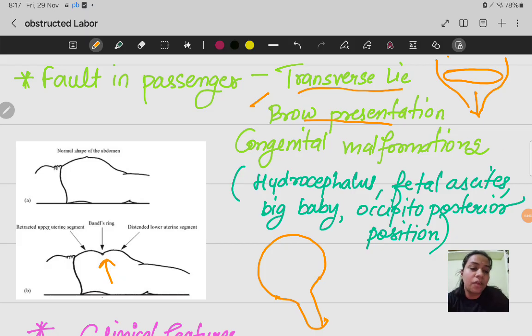Then fetal ascites. Ascites is abnormal fluid collection into the peritoneal cavity. If fetus is having this problem, then too obstructed labor can happen. Then if baby is big in size, this can happen. Then occipital posterior position. These are all the causes of obstructed labor.